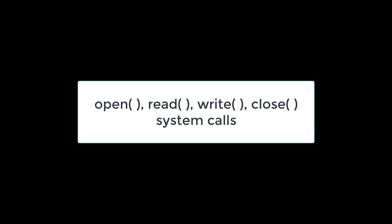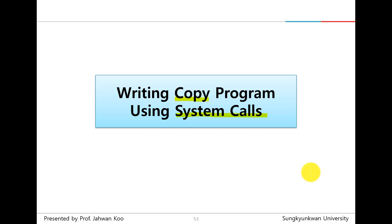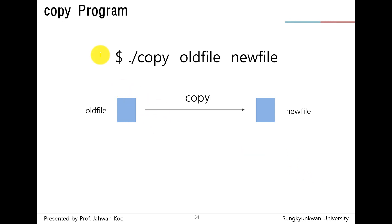For example, open, read, write, and close system calls. The copy program is a simple version of the Unix CP command. That is to say, the copy program copies the content of the existing old file into the new file. In the command line, you can type ./copy oldfile newfile.